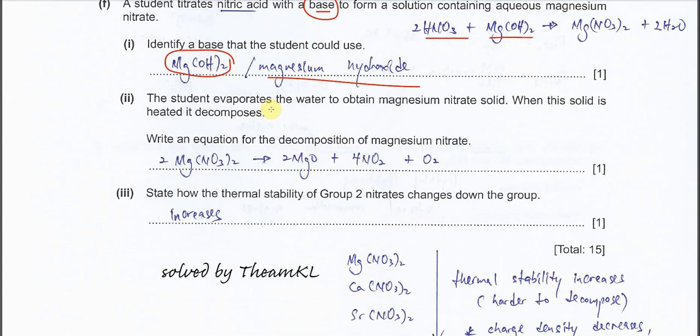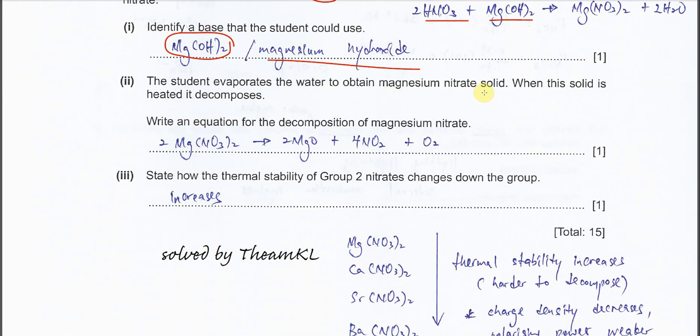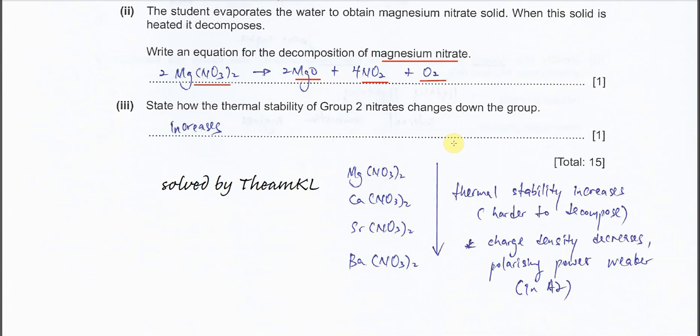Part two. The student evaporates the water to obtain magnesium nitrate solid. When the solid is heated, it decomposes. Write an equation for the decomposition of magnesium nitrate. Magnesium nitrate, after decomposition, forms two gases: NO2, the brown gas, and O2. The residue is magnesium oxide, a white residue. I will put the ratio 2, 2, 4, 1. Or you can use the one in the mark scheme with all divided by 2: 1, 1, 2, half. It's the same thing.